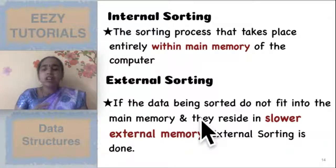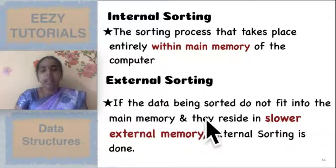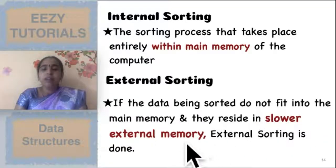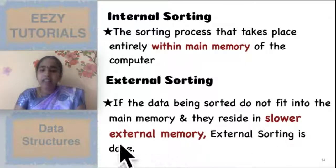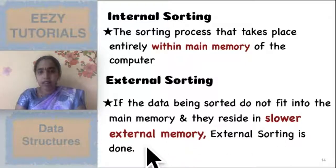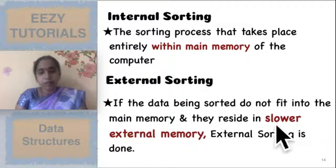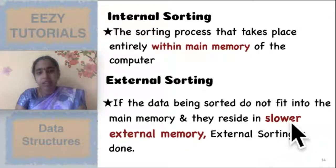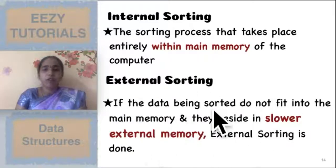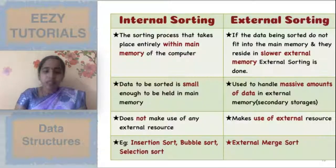External sorting means the data being sorted is not able to fit into your main memory, so you will be storing your data in external memory. Since external memory is slower than main memory, you have to perform external sorting in that slower external memory.